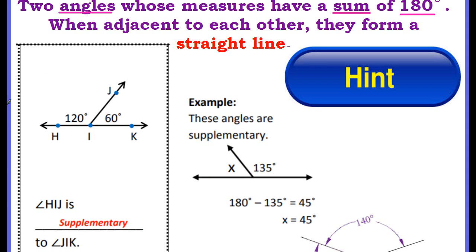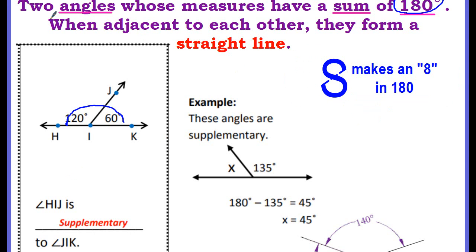Then we have supplementary angles. And these are two angles whose measures have a sum of 180 degrees. When adjacent to each other they form a straight line. Very important. They form a straight line. They add up to 180 degrees. The S for supplementary you could draw one line and it turns into an eight for 180.